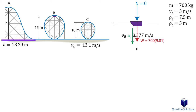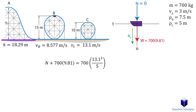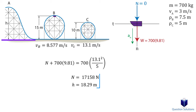Since we picked the minimum velocity for point B, the normal force at that point is zero. However, since the velocity at point C is greater than the minimum required velocity, we will have a normal force greater than zero. Let's figure that out by using the same equation of motion as before — this time we have the velocity and we are trying to find the normal force. Let's solve and those are our answers.